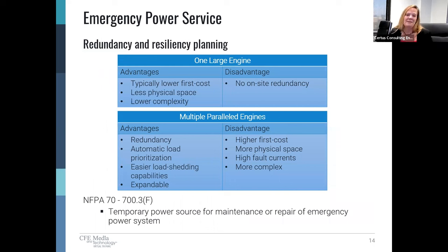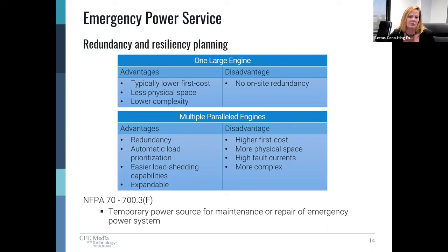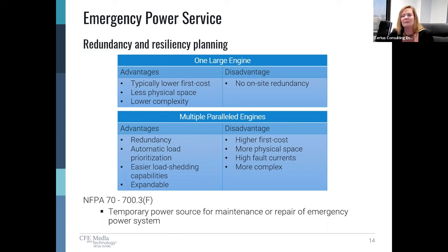We need to plan the same level of redundancy and resiliency on the emergency power side. There are several ways to plan for emergency redundancy. You could look at multiple engines, which is great but not always practical. There are advantages to having just one large engine: typically lower first cost, they take up less space, and overall they're lower complexity. A disadvantage of one larger engine is that you don't have any on-site redundancy.